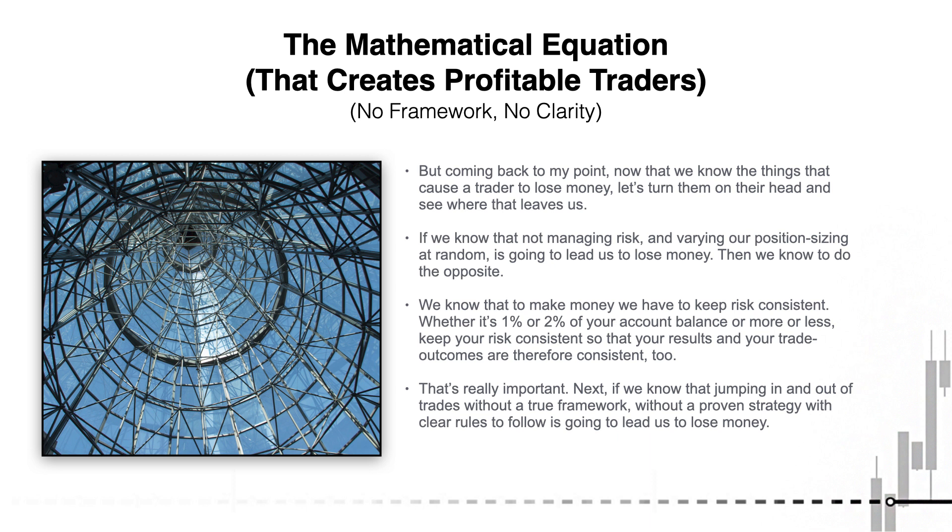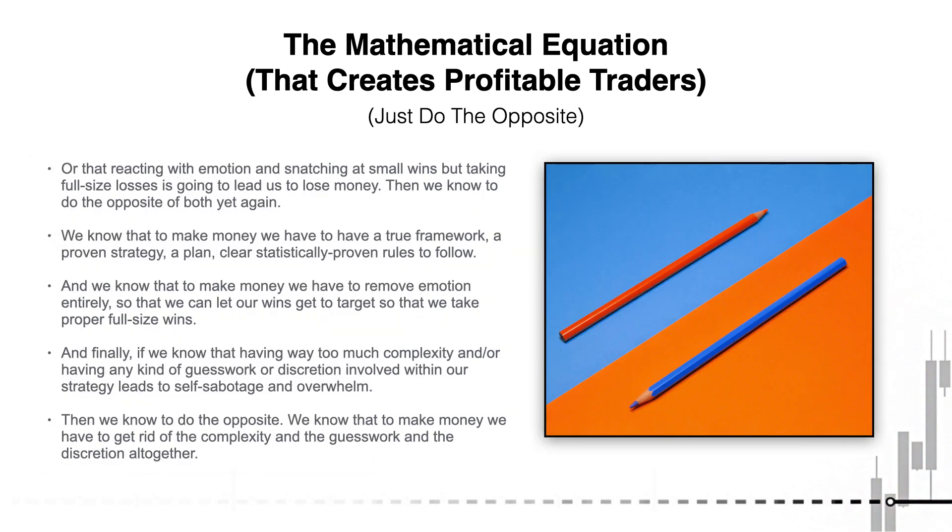Next, if we know that jumping in and out of trades without a true framework, without a proven strategy, with clear rules to follow, is going to lead us to lose money, or that reacting with emotion and snatching at small wins, but taking full-size losses, is going to lead us to lose money, then we know to do the opposite of both. We know that to make money, we have to have a true framework, a proven strategy, a plan, clear statistically proven rules to follow. We know that to make money, we have to remove emotion entirely, so that we can just let our wins get to target, so that we take proper full-size wins.